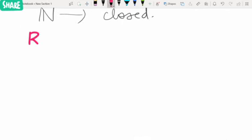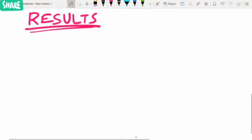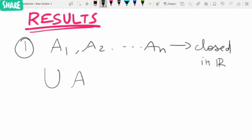see some results on closed sets. The first result: let A₁, A₂, etc., Aₙ be closed sets in R. We have taken a finite number of closed sets, and the union of these will also be closed in R.